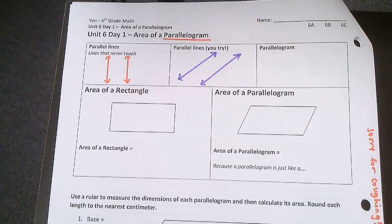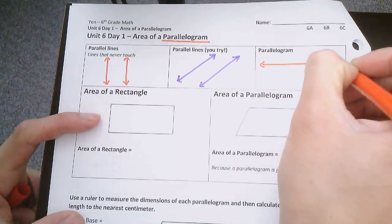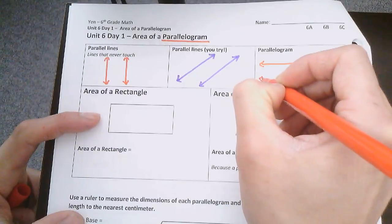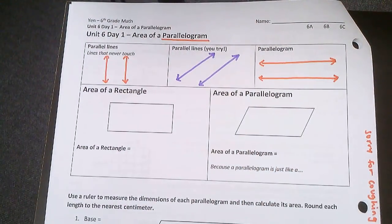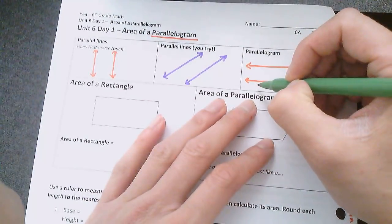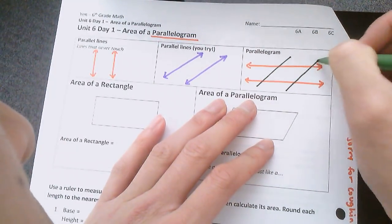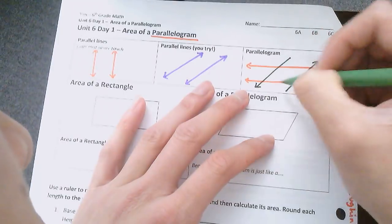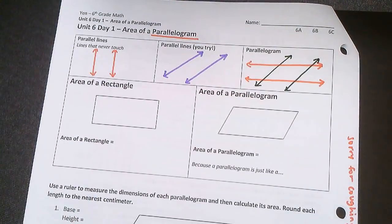So parallelogram is imagine if you have one set of parallel lines like this. These two lines are parallel. And another set of parallel lines like this. They really can be going in any direction, as long as both sets are parallel.